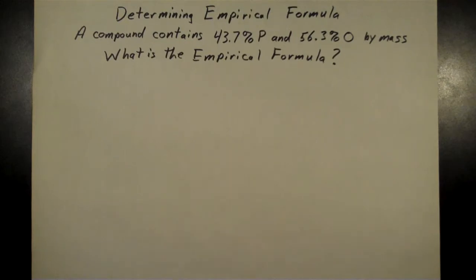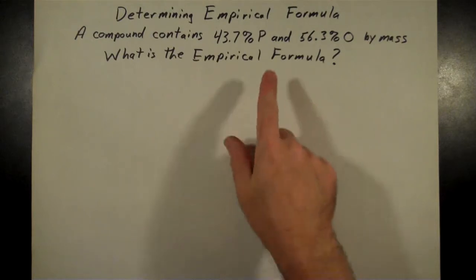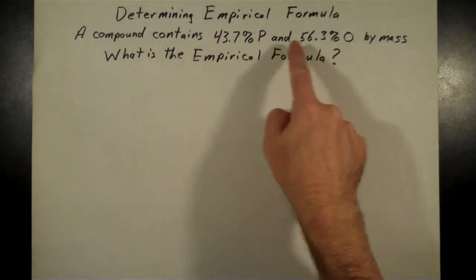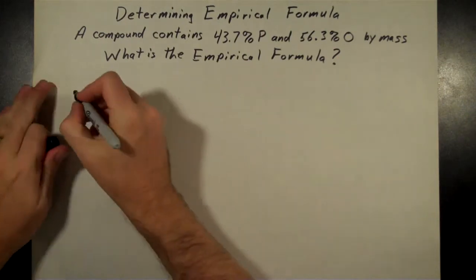Let's take a look at this one. It says a compound contains 43.7% phosphorus and 56.3% oxygen by mass. What's the empirical formula here?